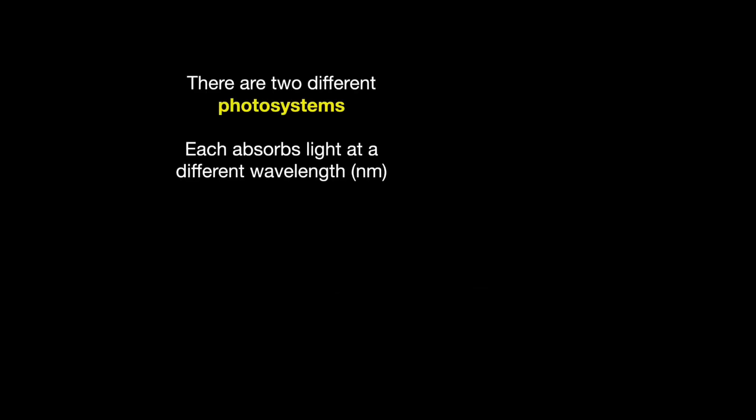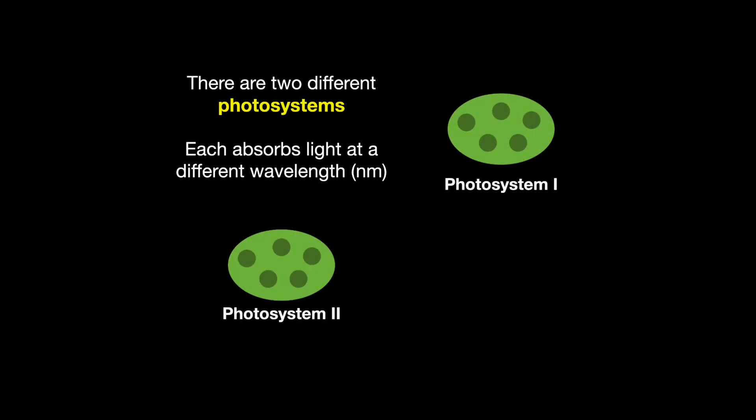There are two different photosystems and each absorbs light at a different wavelength. There's photosystem 1 and 2. Photosystem 2 absorbs light at 680 nanometers so it's often referred to as P680, while photosystem 1 absorbs light at 700 nanometers so it's often referred to as P700.